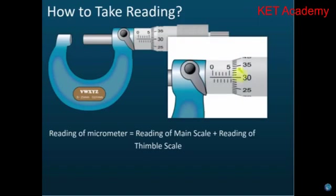For example, on the main scale each mark is 1mm: 0, 1, 2, 3, 4, 5 - that's 5mm. But in the middle of these two we have another scale here, which represents 0.5mm. So it goes 0, 0.5, 1, 1.5, 2, 2.5, 3, 3.5, 4, 4.5, 5. Here, the reading of the main scale is 5.5mm.